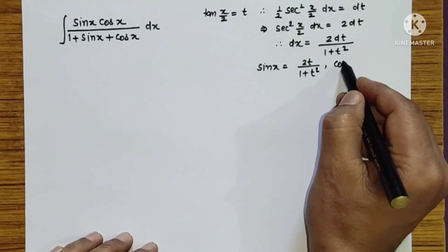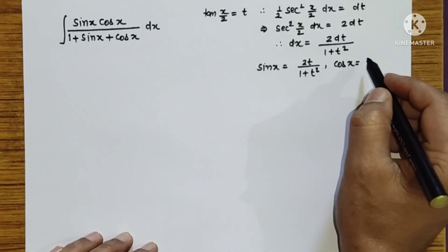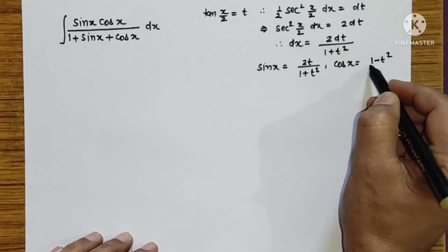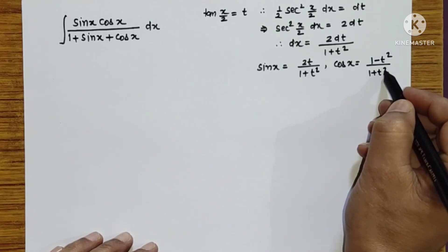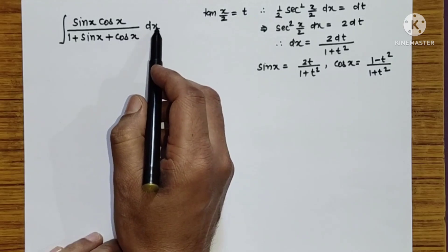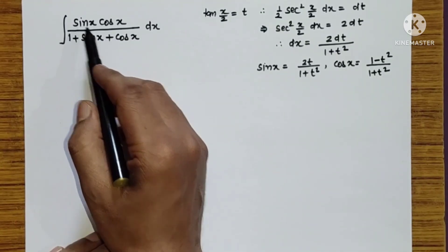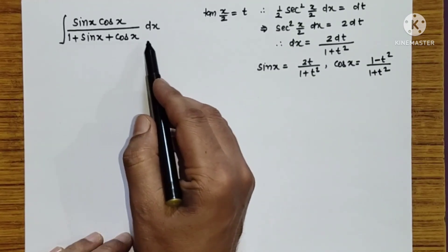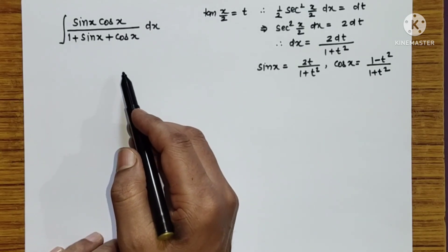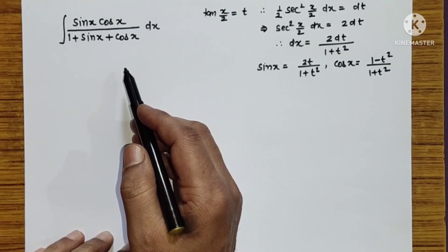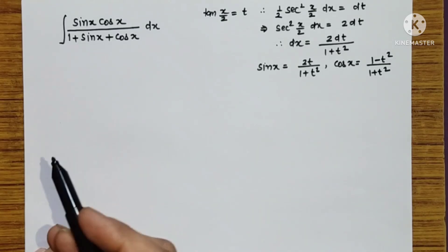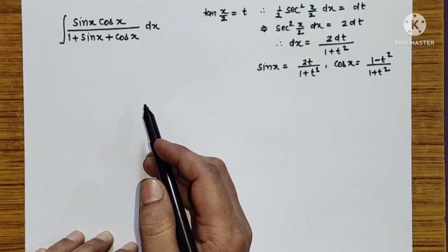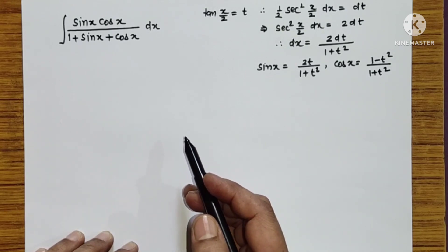We can express cos x as (1 minus tan²(x/2)) over (1 plus tan²(x/2)), giving (1 minus t²) over (1 plus t²). Substituting dx, sin x, and cos x converts the integral into an algebraic function. After that we can use partial fractions and simplification to solve it, but it will be a bit lengthy, so I will prefer the other way using trigonometric identity simplification.